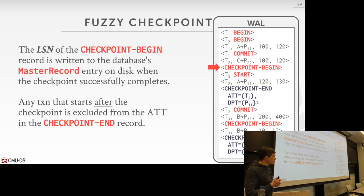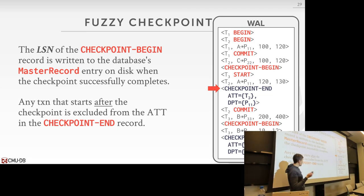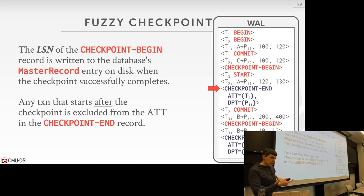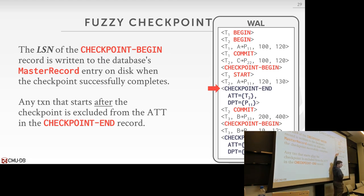So now we have our checkpoint begin, the checkpoint writes things out, and then in the checkpoint end we include transaction T2 because T2 started before the checkpoint started, and then the dirty page table tells us that P11 was also modified during the checkpoint. We don't need to include T3 here because T3 started after our checkpoint started. Once we have the checkpoint end written out to disk successfully — meaning we flushed all the pages out that we wanted to take into the checkpoint — then we go ahead and update our master record to now include the pointer to the checkpoint begin, because that's going to be our anchor point where we start our analysis during recovery.